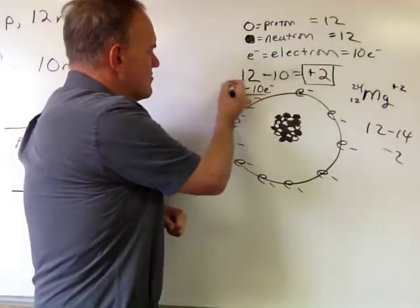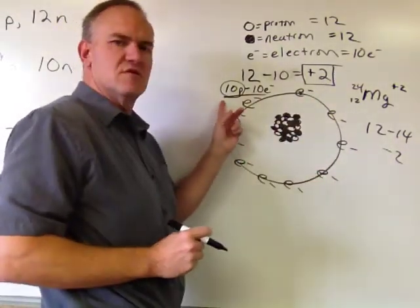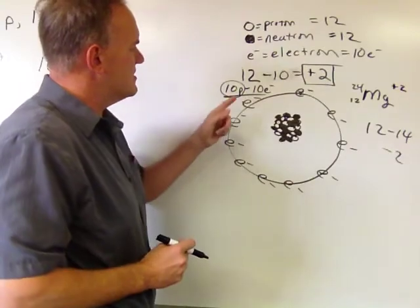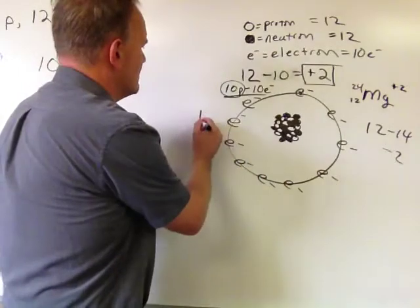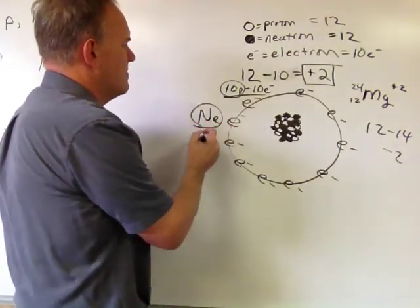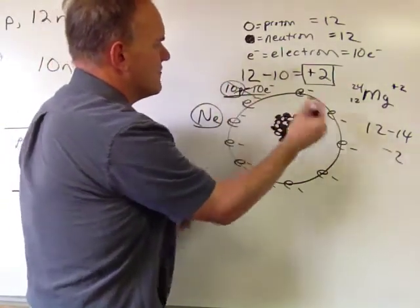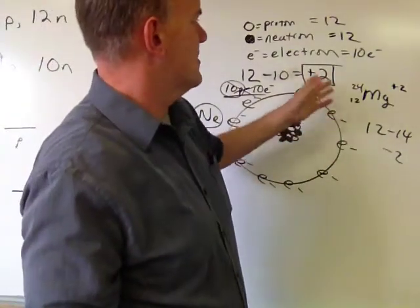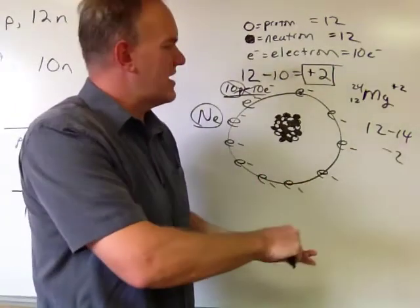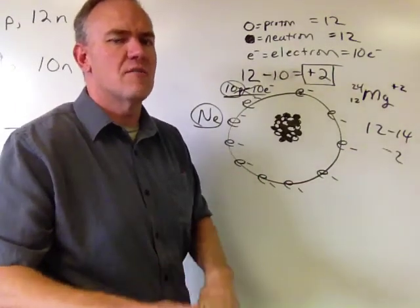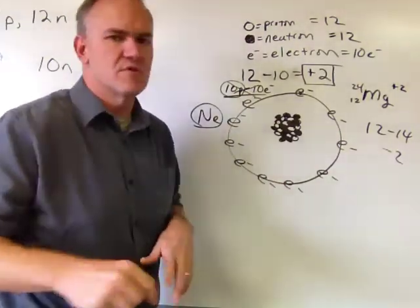But remember, the number of protons tells you what it is. So this would not be a neutral magnesium atom if you did this. It would be neutral, but it would not be magnesium anymore. We would look, well, what has 10 protons? And we'd look on our periodic table, and we'd see that that was neon. So you can't change the proton number without changing the atom. So whenever you're counting these things up, remember that if you add electrons or remove electrons, that makes it an ion. If you add protons or remove protons, you're not making an ion necessarily. You are changing what kind of atom it is. And so that's something to keep in mind.